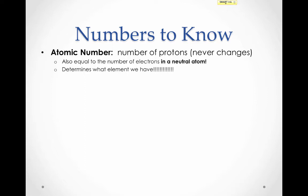The atomic number is also equal to the number of electrons when the atom is neutral. We'll talk more about what it means for an atom to be neutral versus charged a little bit later. But for now, we can assume that all atoms we look at are neutral. Therefore, their atomic number will be both the number of protons and the number of electrons.